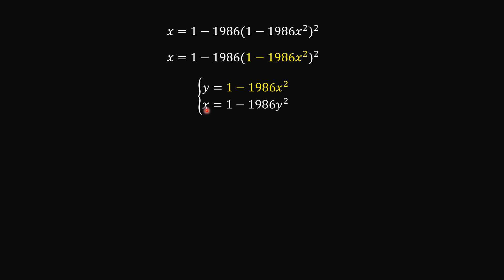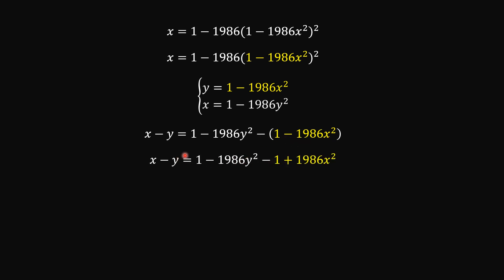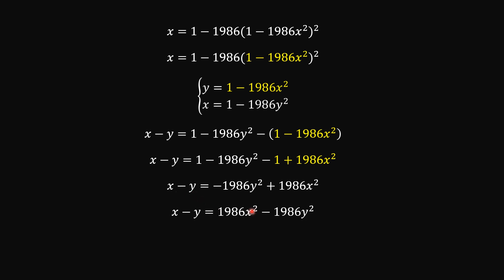Now I'm going to subtract side by side — y minus x. And then after multiplying by the negative sign here, we're going to have this. Now 1 minus 1 is 0, and I'm going to write this expression minus this, just organizing terms of x. And then we have this.